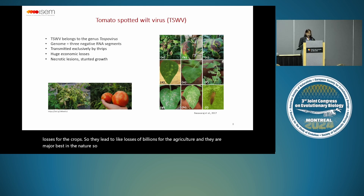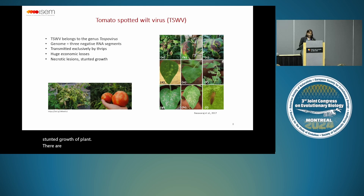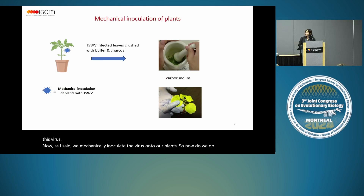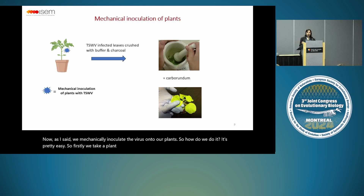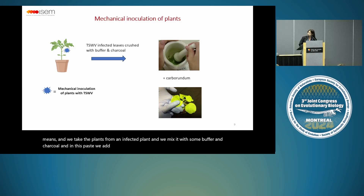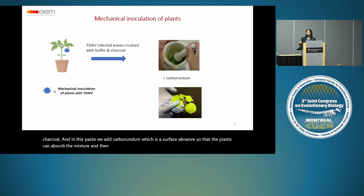The symptoms of tomato spotted wilt virus are stunted growth of the plant, necrotic lesions, bronzing of leaves, and fruits are totally destroyed. We mechanically inoculate the virus onto our plants — it's pretty easy. First we take a plant already infected by this virus, take material from the infected plant and mix it with some buffer and charcoal. To this paste we add carborundum, which is a surface abrasive so the plants can absorb the mixture. This mixture is then applied manually to the leaves, and the plants get infected.